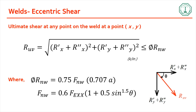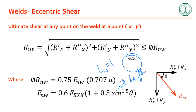The capacity of the weld is calculated as φRnw = 0.75 × Fnw × area of weld. In this approach we calculate everything per unit length, so Lw is taken as one, leaving only the effective throat of 0.707a. Fnw is calculated from 0.6 Fexx × (1 + 0.5 sin^1.5 θ), and the important variable here is theta.